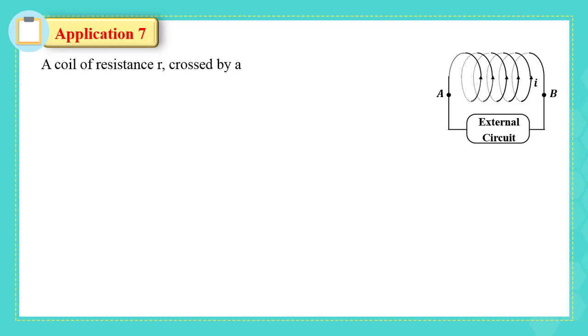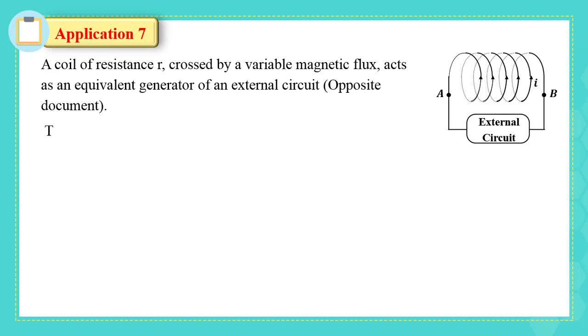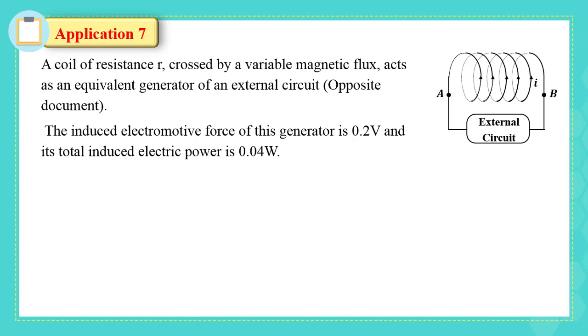Application 7. A coil of resistance R, crossed by a variable magnetic flux, acts as an equivalent generator of an external circuit opposite document. The induced electromotive force of this generator is 0.2 volt, and its total induced electric power is 0.04 watt.